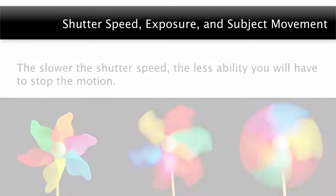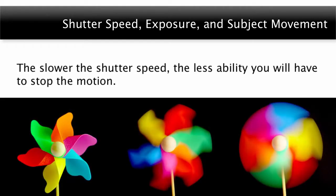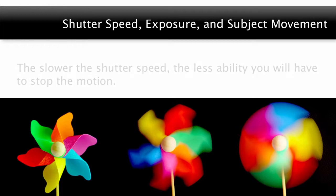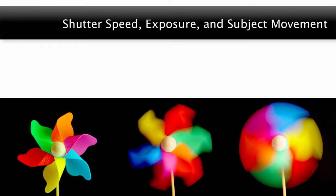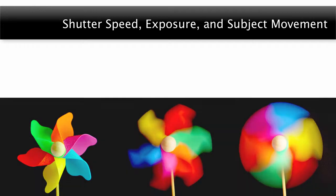The slower the shutter speed, the less ability you will have to stop motion. The faster the shutter speed, the more likely you will be able to stop motion. Keep in mind that showing or stopping motion depends on the motion of the subject to begin with and your film ISO choice.